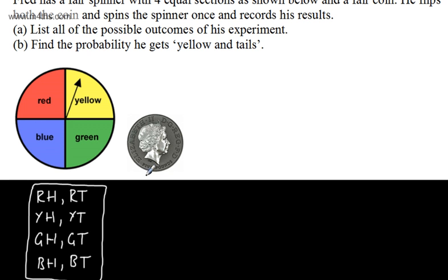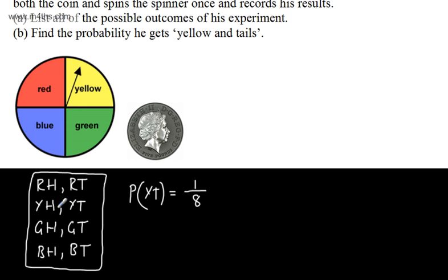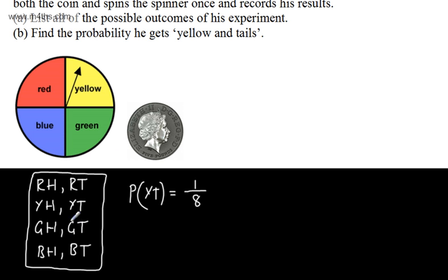The probability of yellow and tails: there is one yellow-and-tail outcome out of a total of eight, so it's one out of eight. The probability of a tail is one-half. The probability of yellow is one-quarter. This is a systematic way of listing all possible outcomes. Once we have them in this form, it's much easier to work with. That's some basic work with listing outcomes and sample spaces.